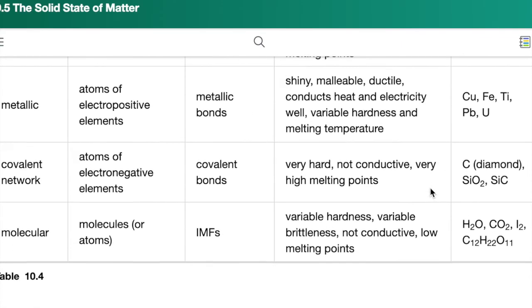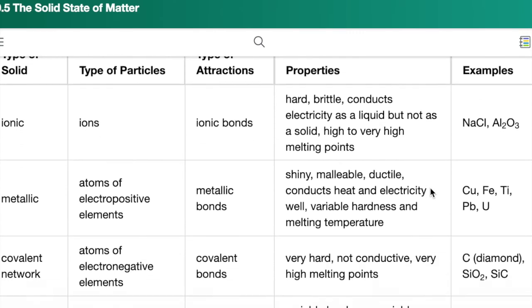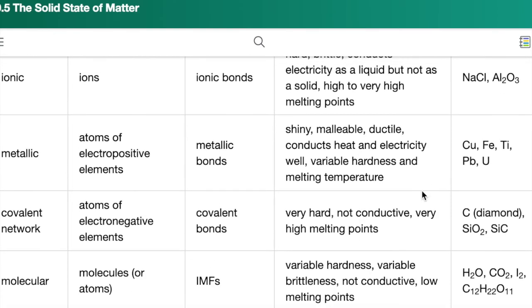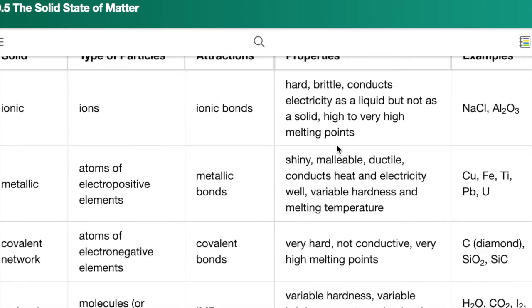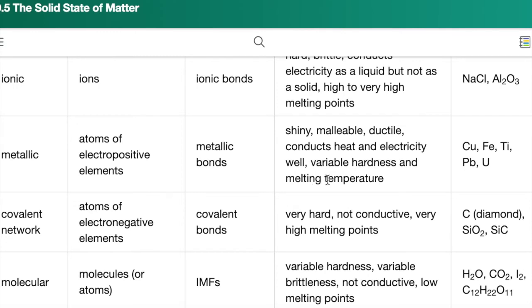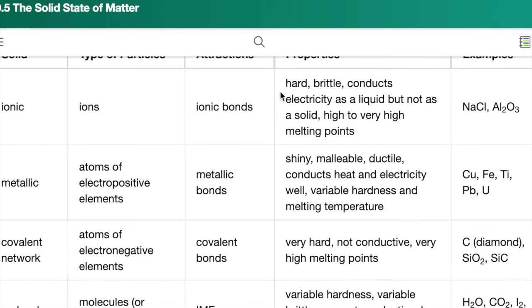So here we have a table summarizing the properties of these different kinds of solids. I also have a little summary in the note packet as well. The solids that are the most conductive are the metallic solids. And then also, if you melt or dissolve ionic solids, then they can conduct electricity, but as the solid ion itself, so sodium chloride as salt, as a solid salt, does not conduct electricity very well. But once you dissolve it, or if you melted it, it would be able to conduct electricity very well.